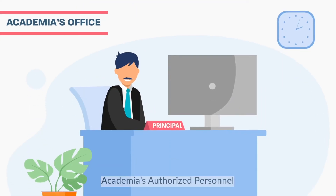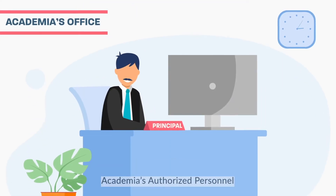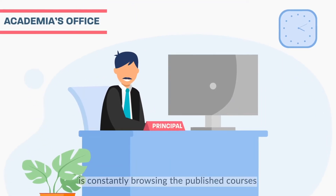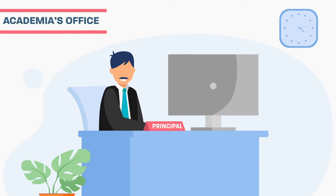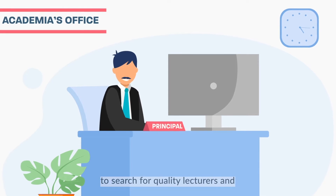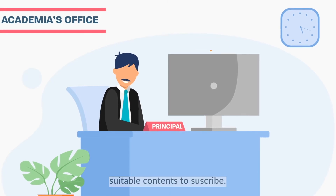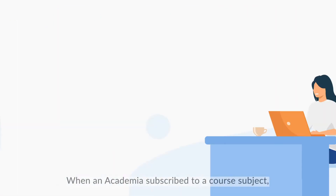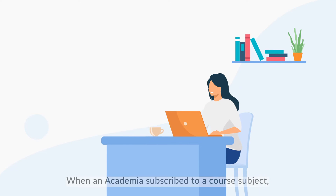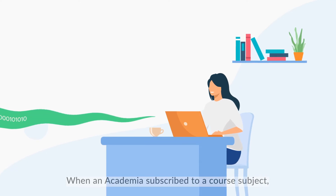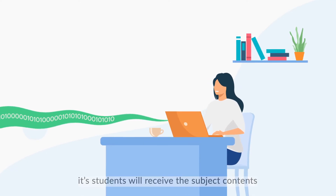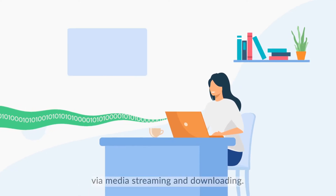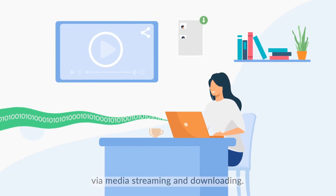On the other end, an Academia's authorised personnel is constantly browsing the published courses to search for quality lecturers and suitable content to subscribe. When an Academia subscribes to a core subject, its students will receive the subject contents via media streaming and downloading.